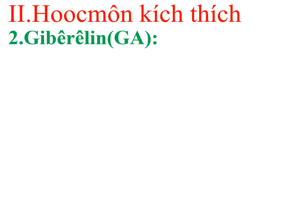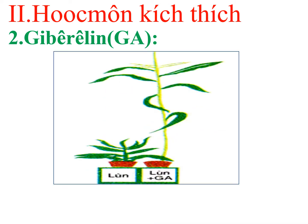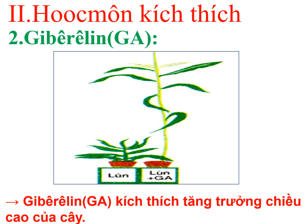Hốc môn thứ 2 là gibberellin, viết tắt là GA. Quan sát hình ảnh: cùng một giống ngô, chậu bên tay trái không xử lý gibberellin, chậu bên tay phải có xử lý gibberellin. Khi có mặt của gibberellin thì cây sẽ thúc đẩy tăng trưởng chiều cao rất nhanh. Qua đây chứng tỏ gibberellin có tác dụng kích thích tăng trưởng chiều cao của cây.